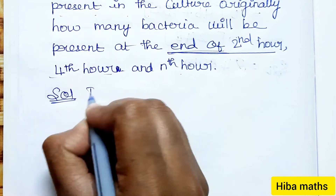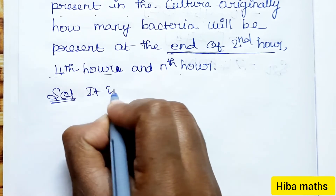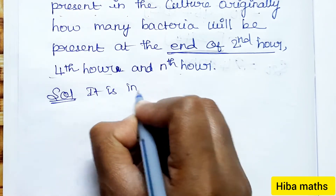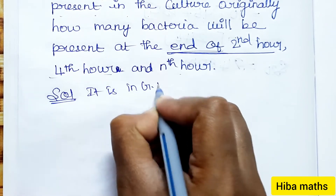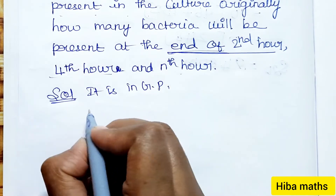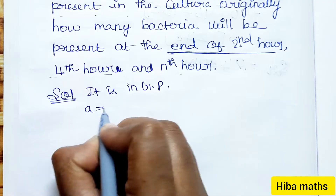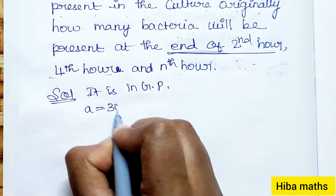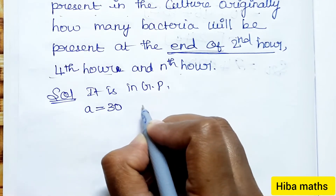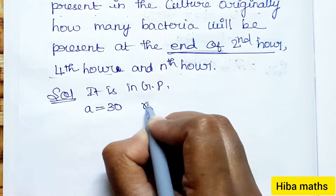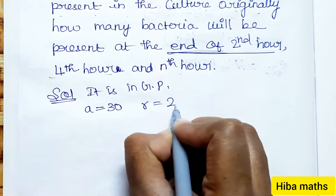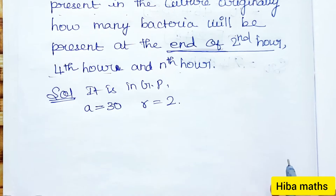In this GP, the first term A is equal to 30, and the common ratio R is equal to 2, since the bacteria doubles every hour.